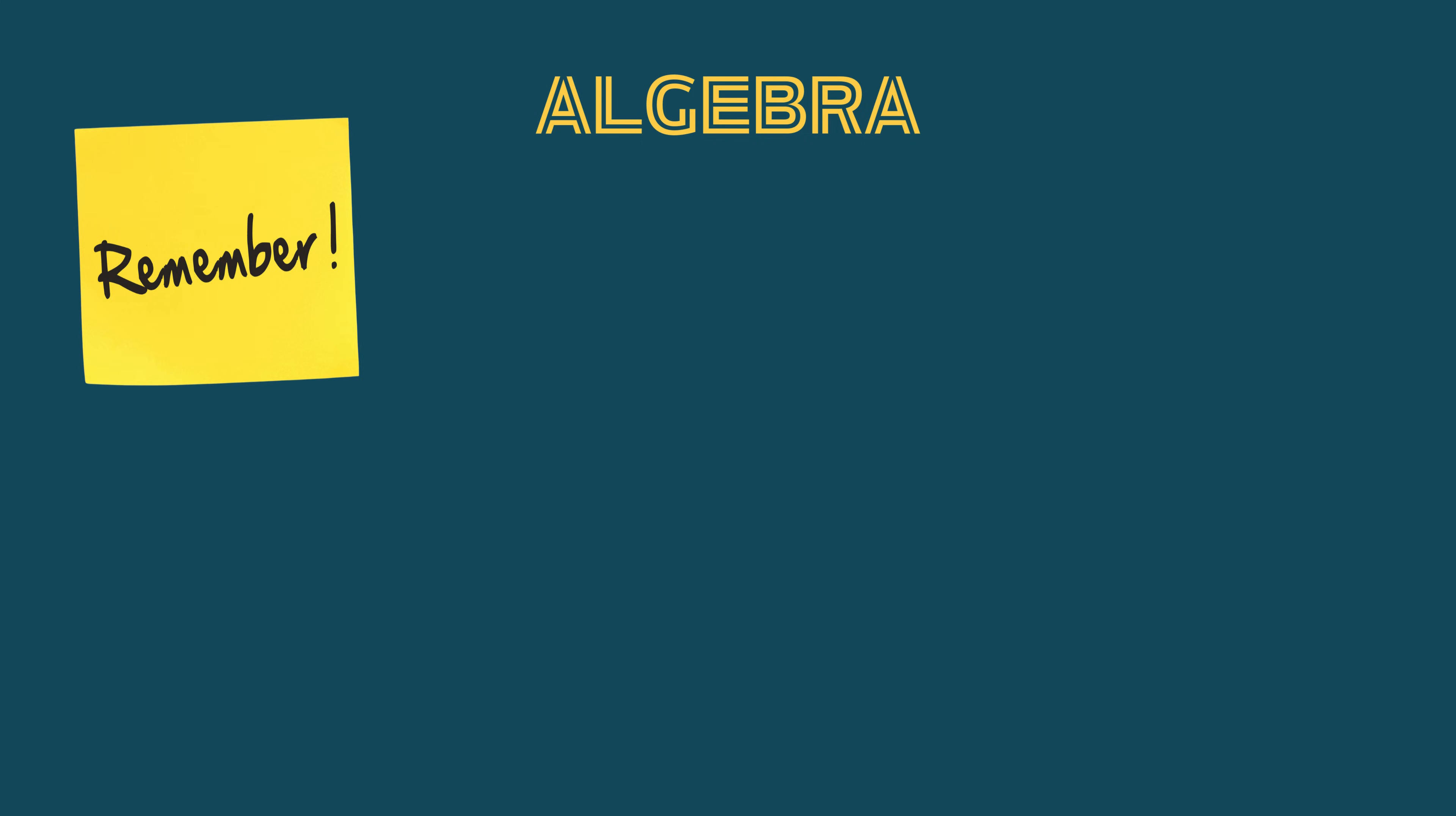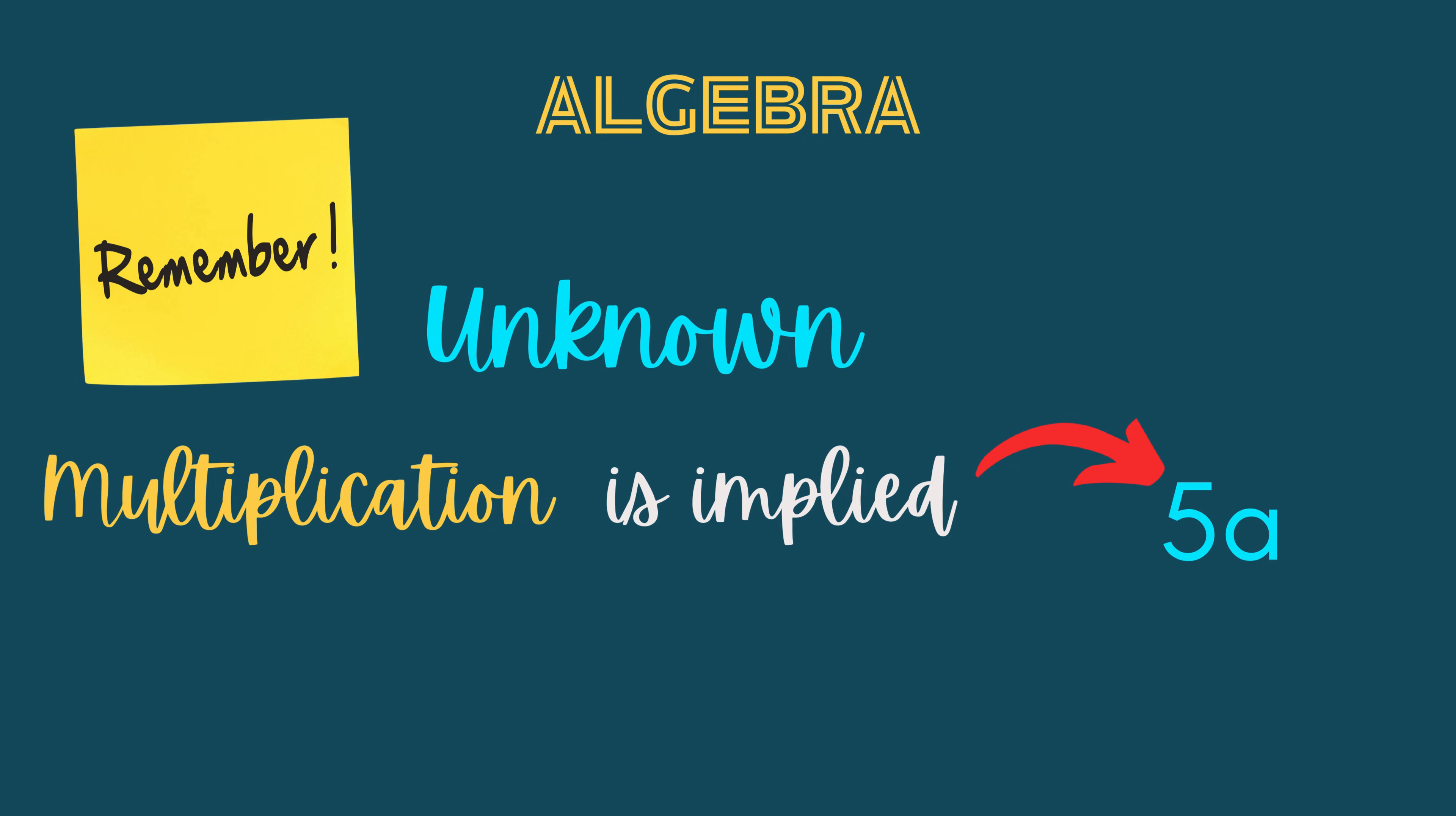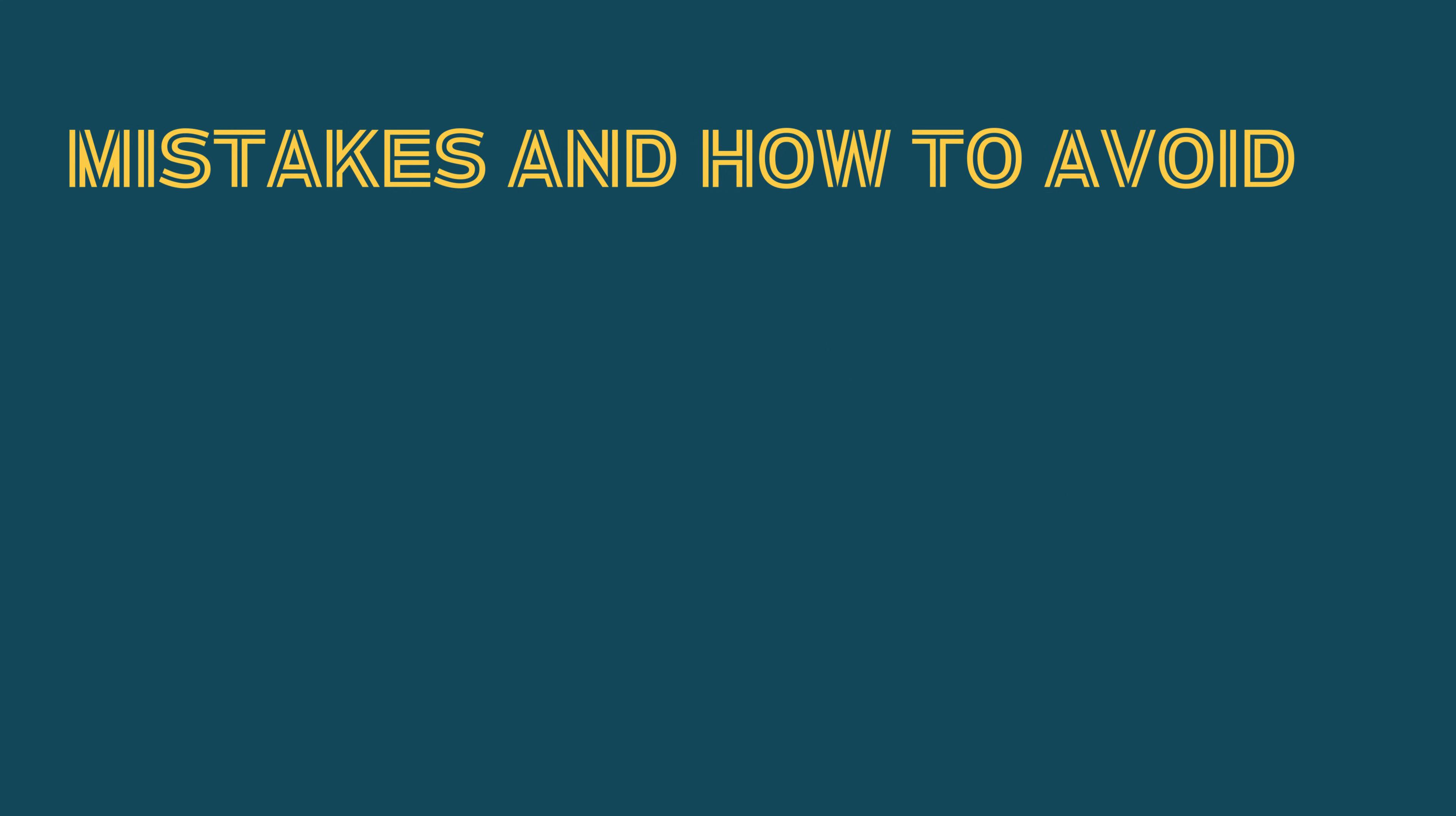Okay, so we've learned that algebra is a lot like arithmetic, but it has values or variables that we need to solve for. Moreover, the multiplication sign is usually not shown in algebra because, as it is the default operation, you can just assume that two things right next to each other are being multiplied.